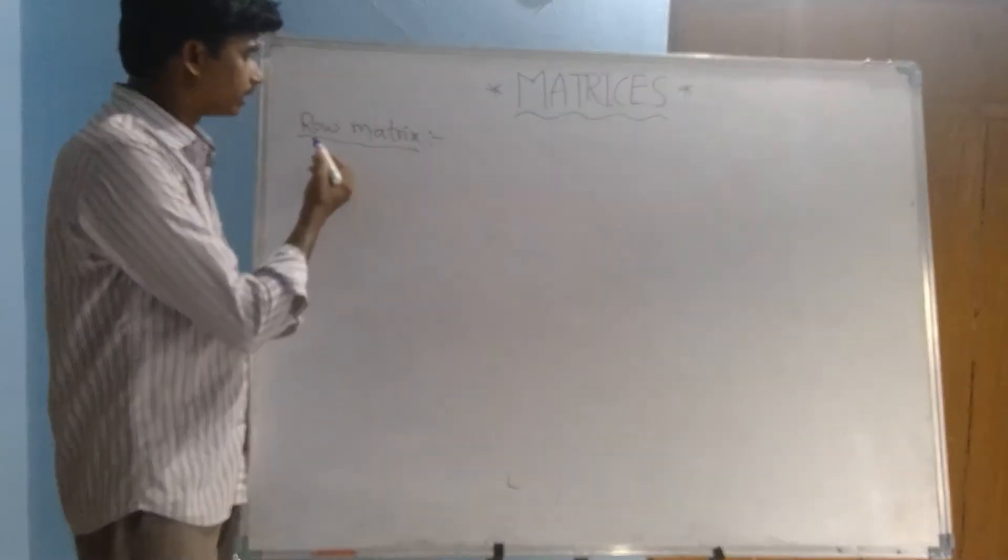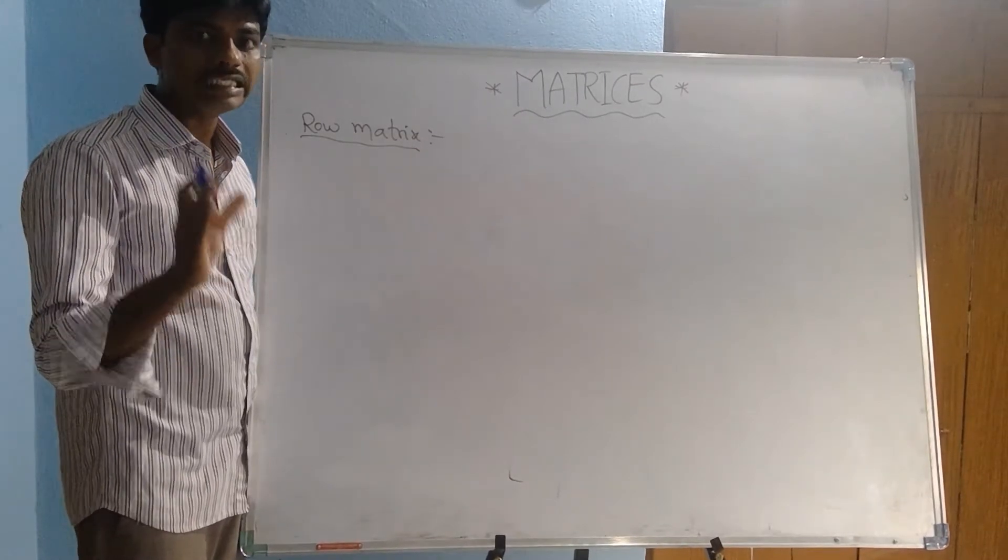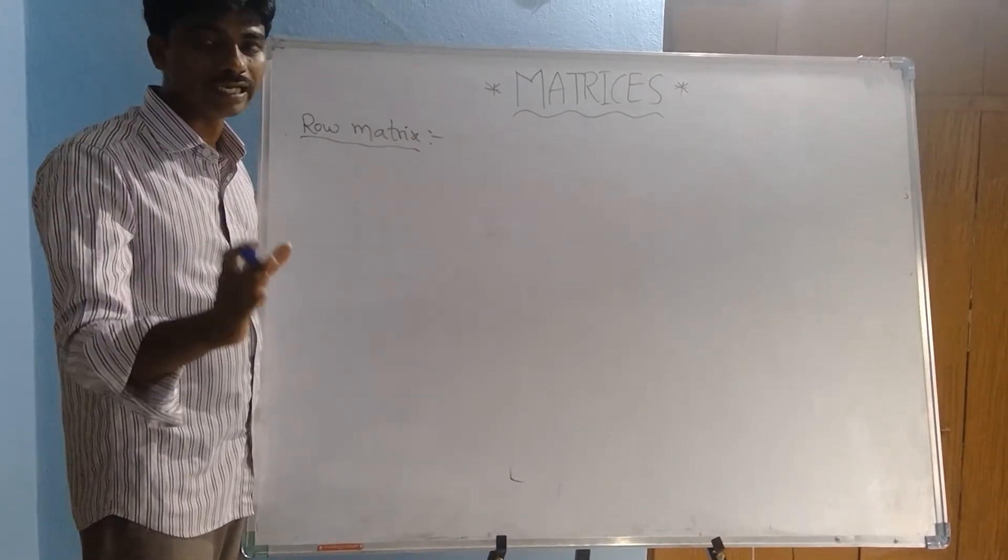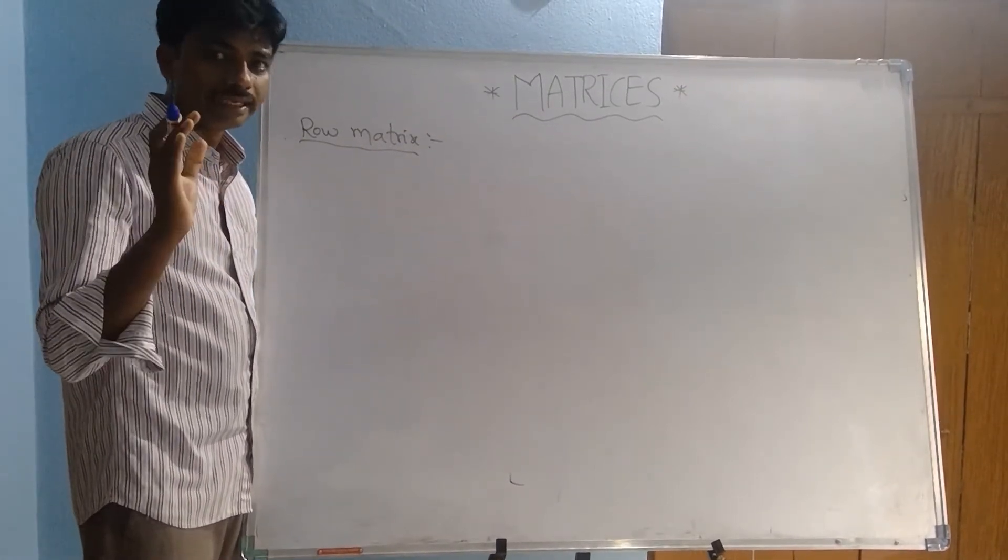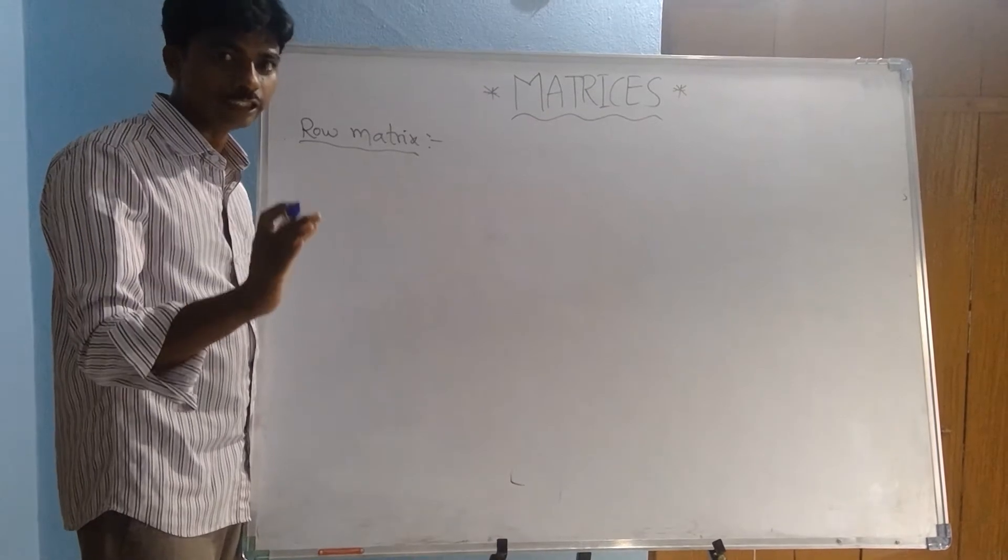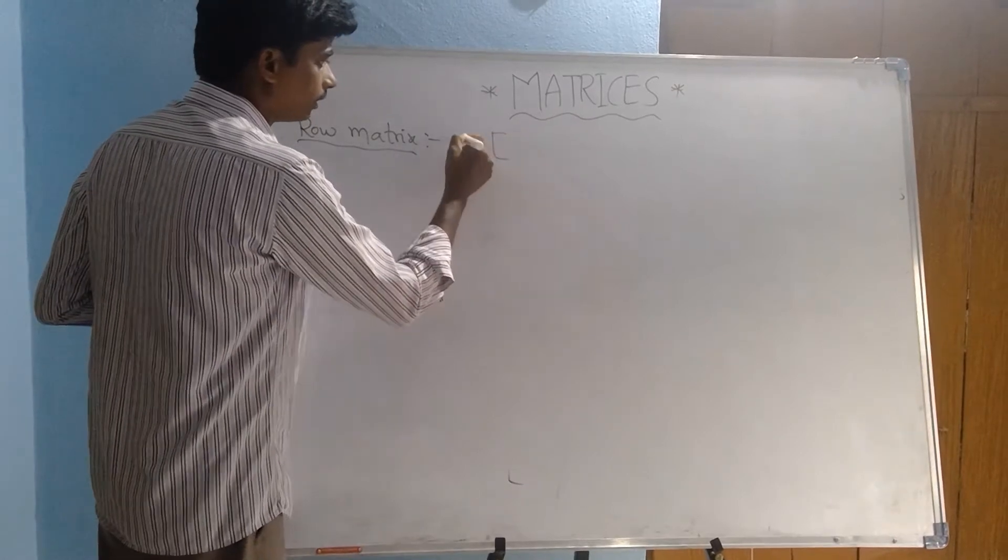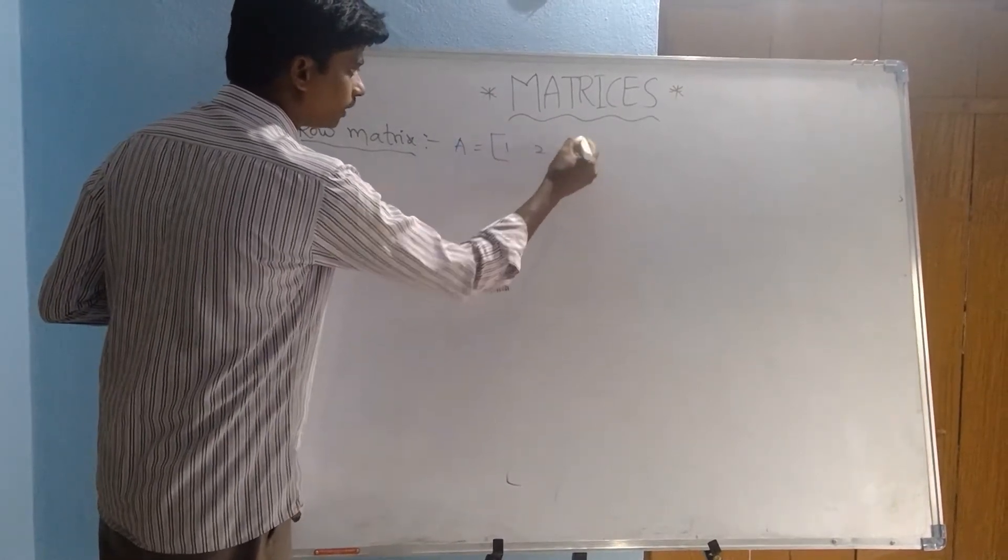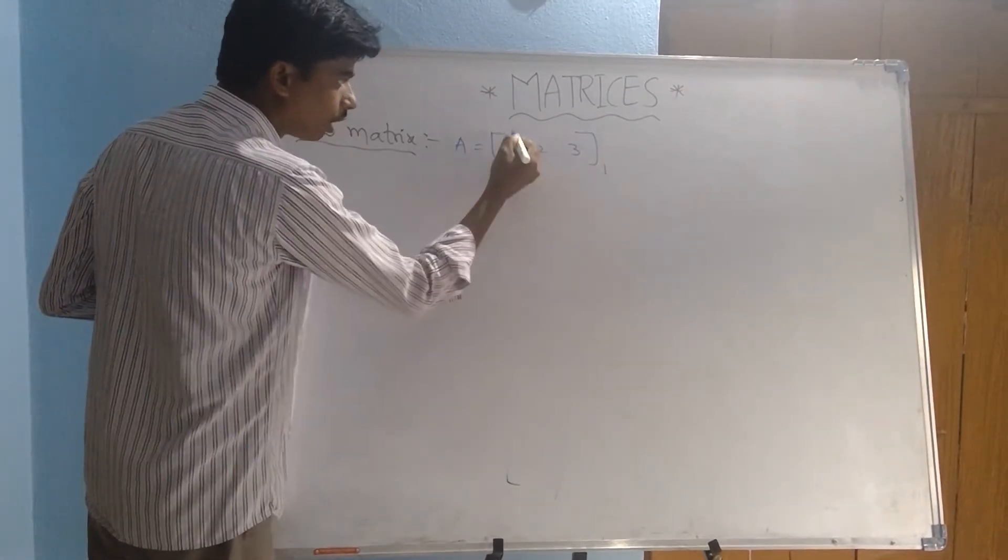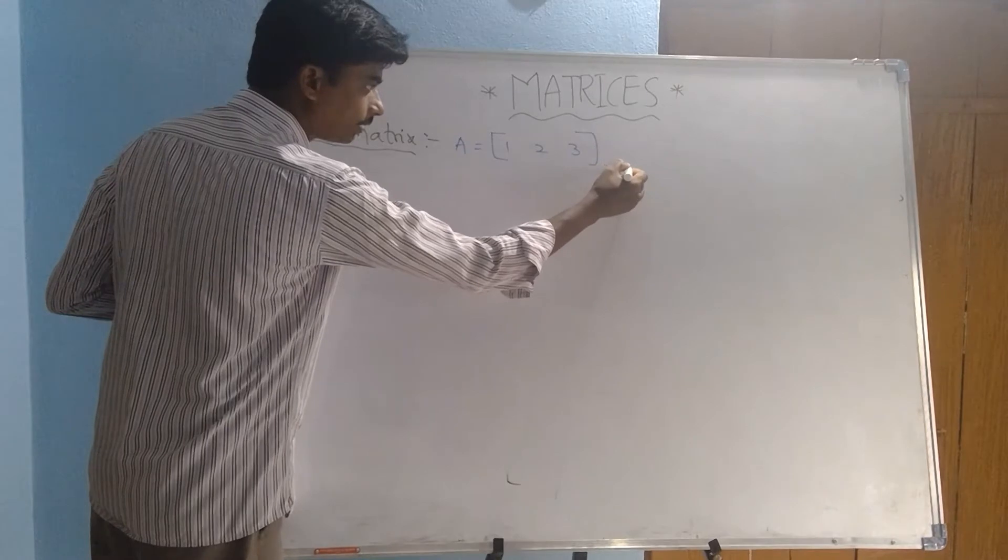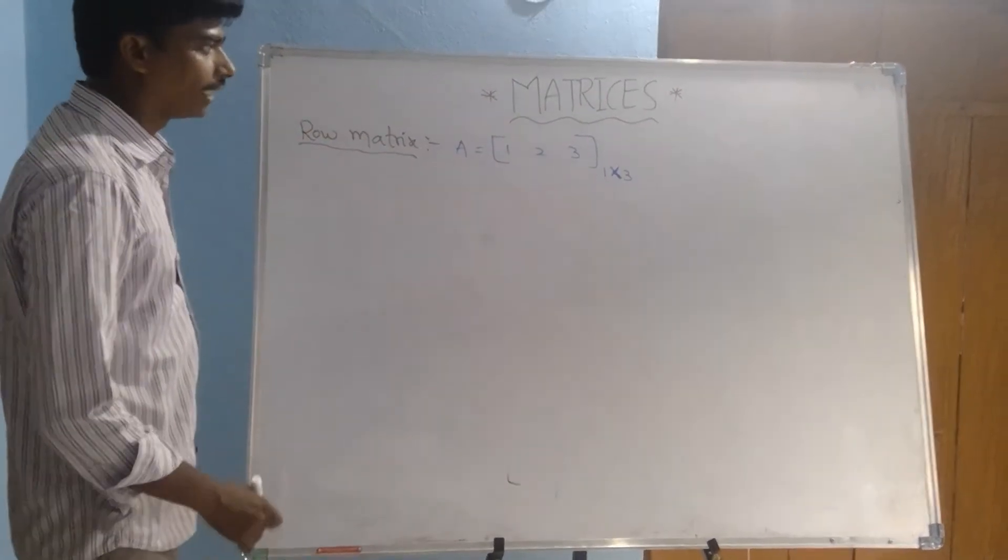Next matrix is row matrix. Simple definition. A matrix having a single row is called a row matrix. That means here, A equals 1, 2, 3. This is a single row matrix. How many rows? One row. How many columns? Three columns. This order is 1 by 3.